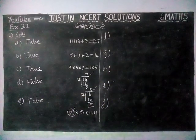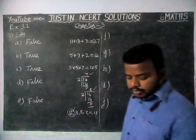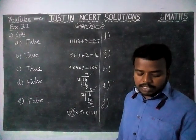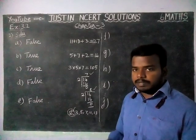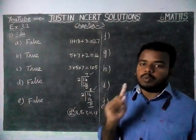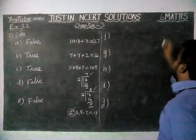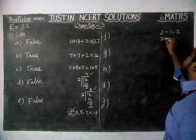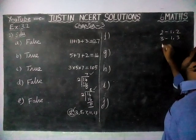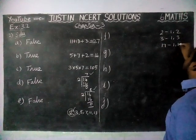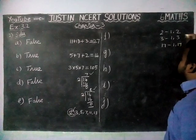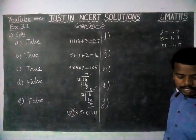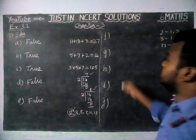Option F: prime numbers do not have any factors. Actually, prime numbers have exactly 2 factors — 1 and the number itself. For example, the factors of 2 are 1 and 2; factors of 3 are 1 and 3; factors of 17 are 1 and 17. So 1 and itself are factors of every prime number, and therefore this statement is false.